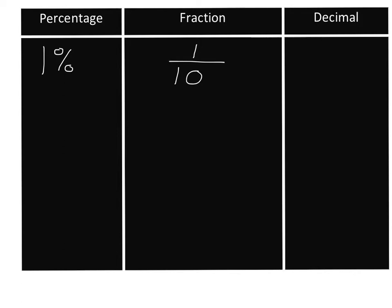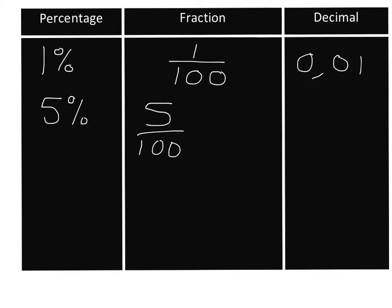If I take one percent, this quite simply means one per hundred — one over a hundred, a fraction just like that. This makes it very easy to turn a percentage into a fraction and into a decimal. One percent is one over a hundred, and from our work on decimals and fractions, that is just 0.01. So five percent will just be five over a hundred, and as a decimal that'll be 0.05.